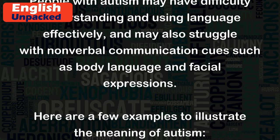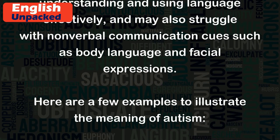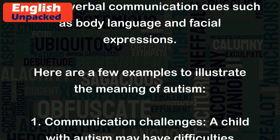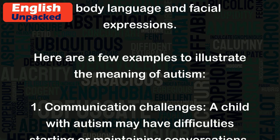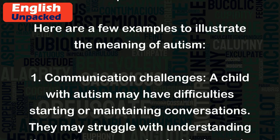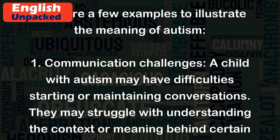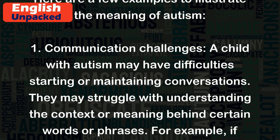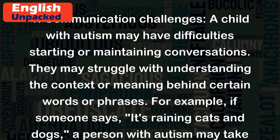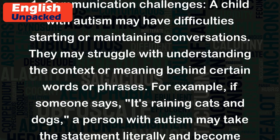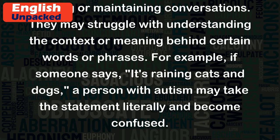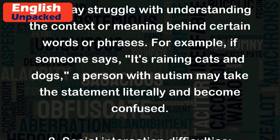Here are a few examples to illustrate the meaning of autism. 1. Communication Challenges. A child with autism may have difficulties starting or maintaining conversations. They may struggle with understanding the context or meaning behind certain words or phrases. For example, if someone says 'it's raining cats and dogs,' a person with autism may take the statement literally and become confused.